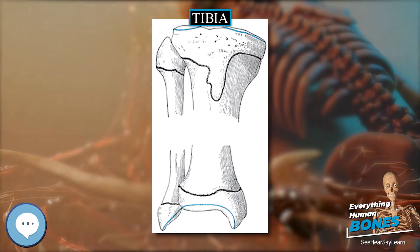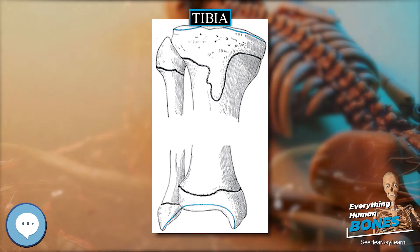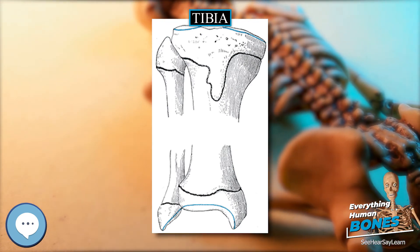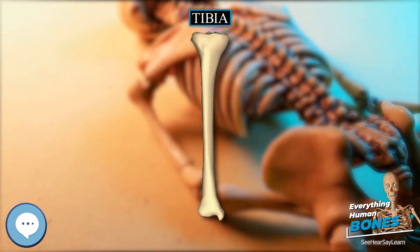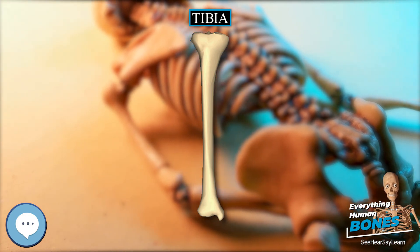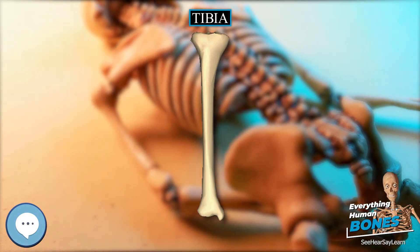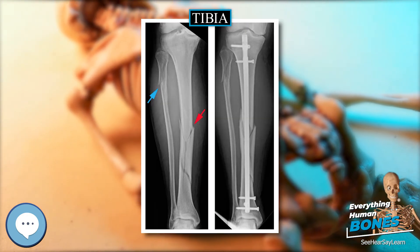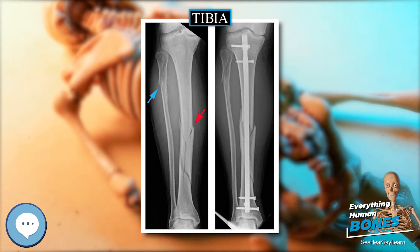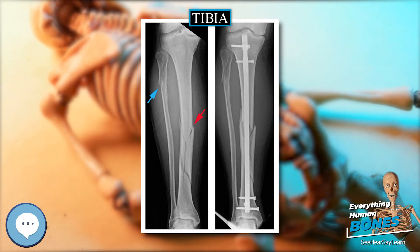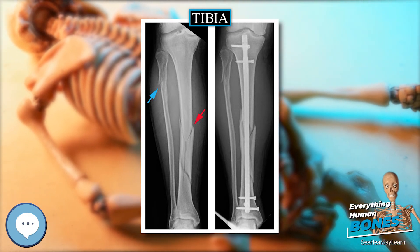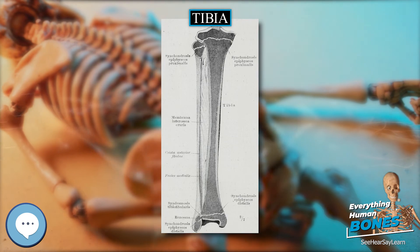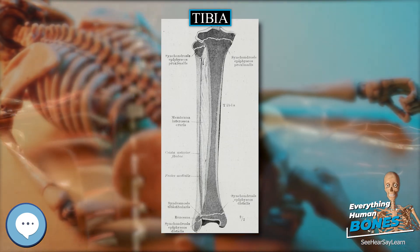Joints. The tibia is a part of four joints: the knee, ankle, superior and inferior tibiofibular joint. In the knee, the tibia forms one of the two articulations with the femur, often referred to as the tibiofemoral components of the knee joint. This is the weight-bearing part of the knee joint.